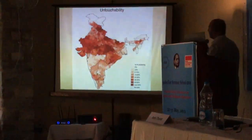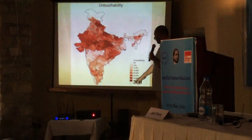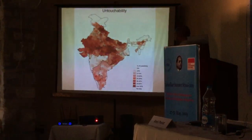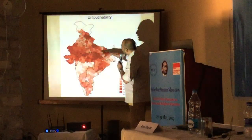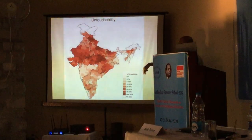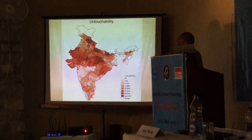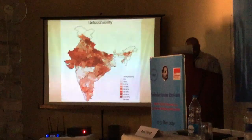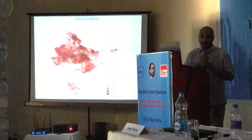We made a district-level map of the practice of untouchability. Dark red areas are where more than 50% of our village-level sample practices untouchability, with each gradation representing a 10% reduction toward white. The concentration is mostly in the north. Someone asked why Maharashtra and Kerala appear so white — either they genuinely don't practice it as much due to movements like Ambedkar's, or they know the correct answer to give. These are self-reported responses, so we can't be certain.